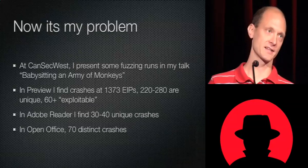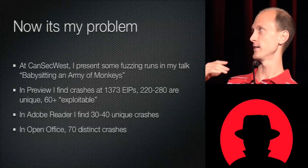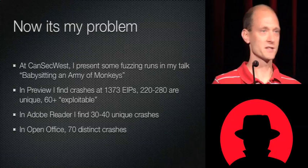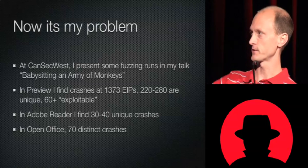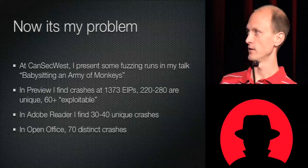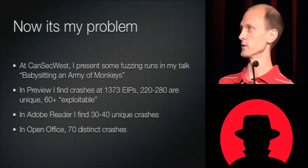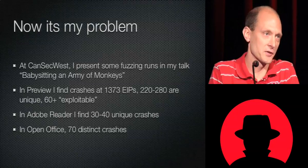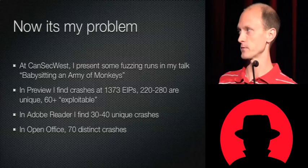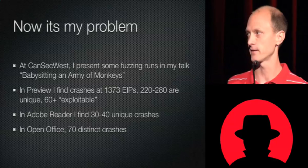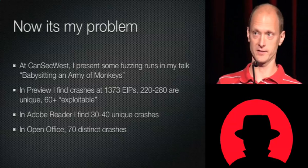I had this problem as well. I gave a talk at CanSecWest and in some ways this talk is the continuation of that talk. I talked about all the fuzzing runs I did — I found a ton of bugs and there were way too many to analyze. For example, in Preview I found 1,300 different crashes, of which Crash Wrangler says there are really 220 unique ones, of which 60 are exploitable. Likewise in Adobe Reader there were 30 to 40 crashes, and 70 in OpenOffice. This is a serious problem, and there are actually a lot of talks at Black Hat this year talking about this.